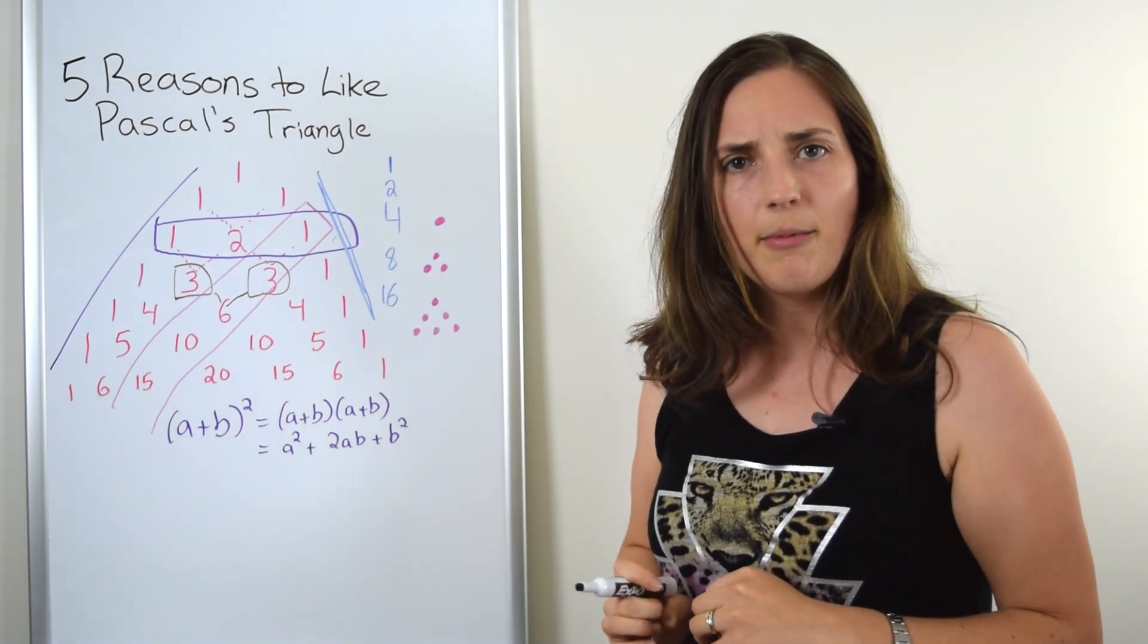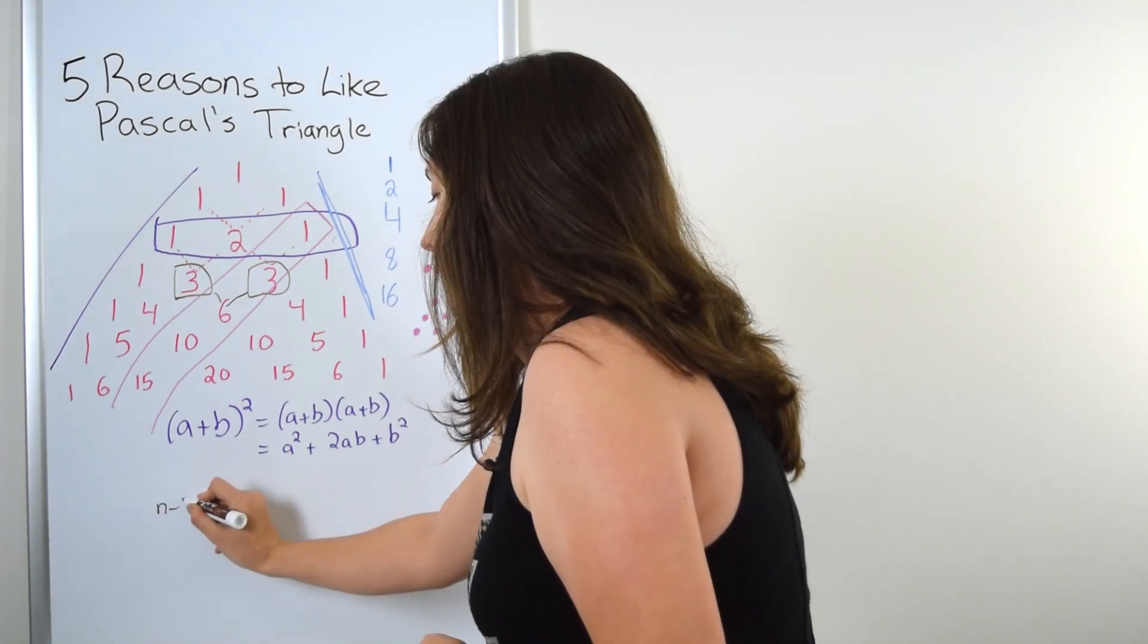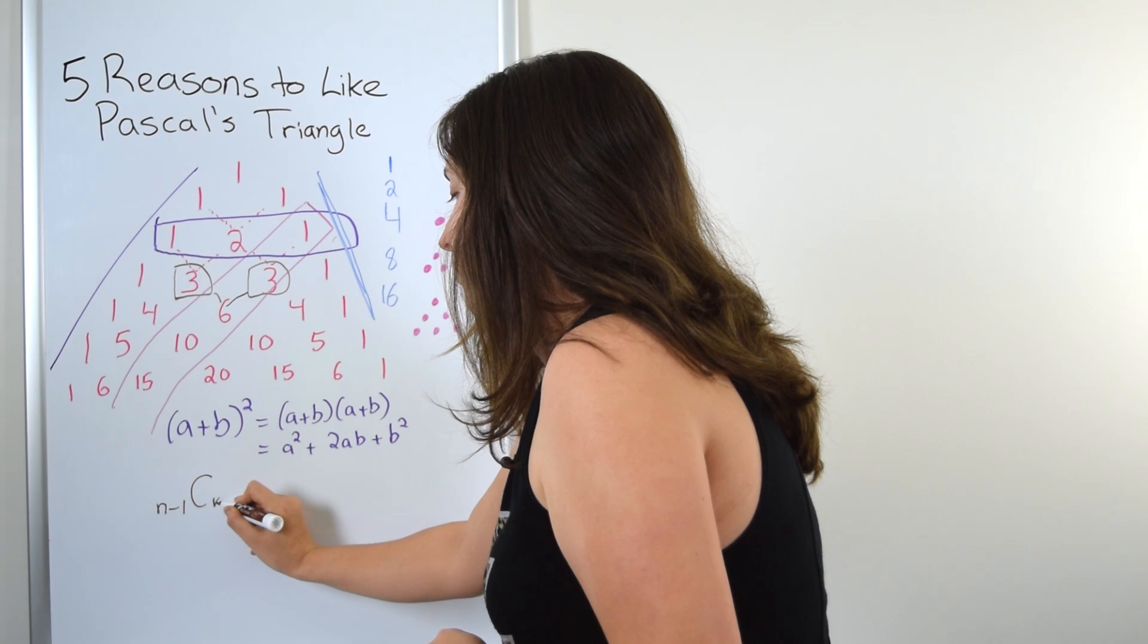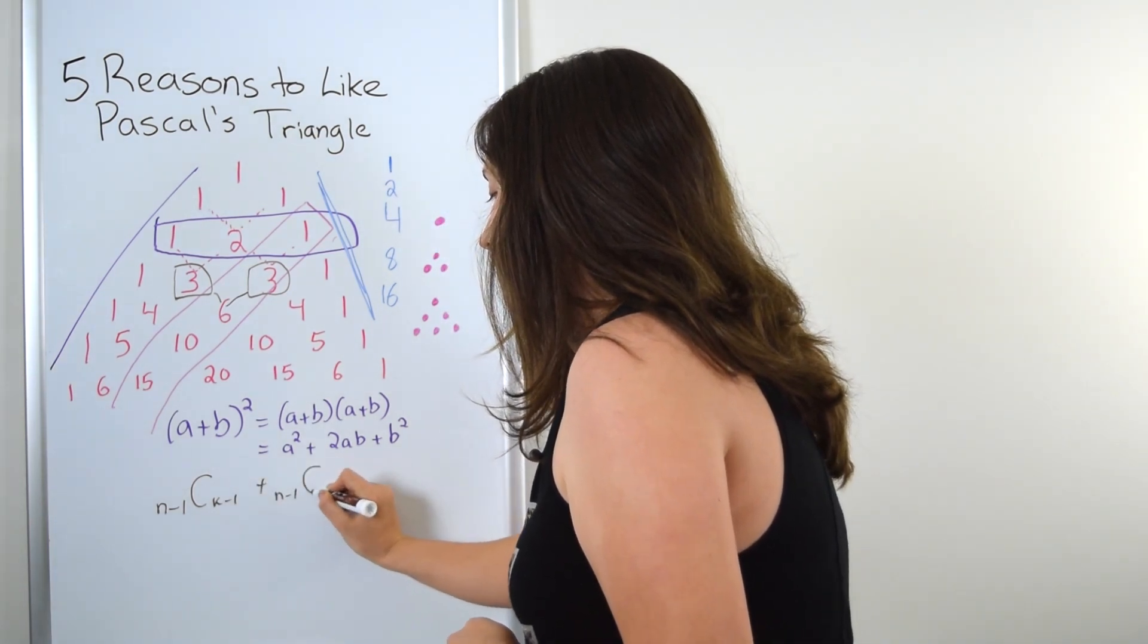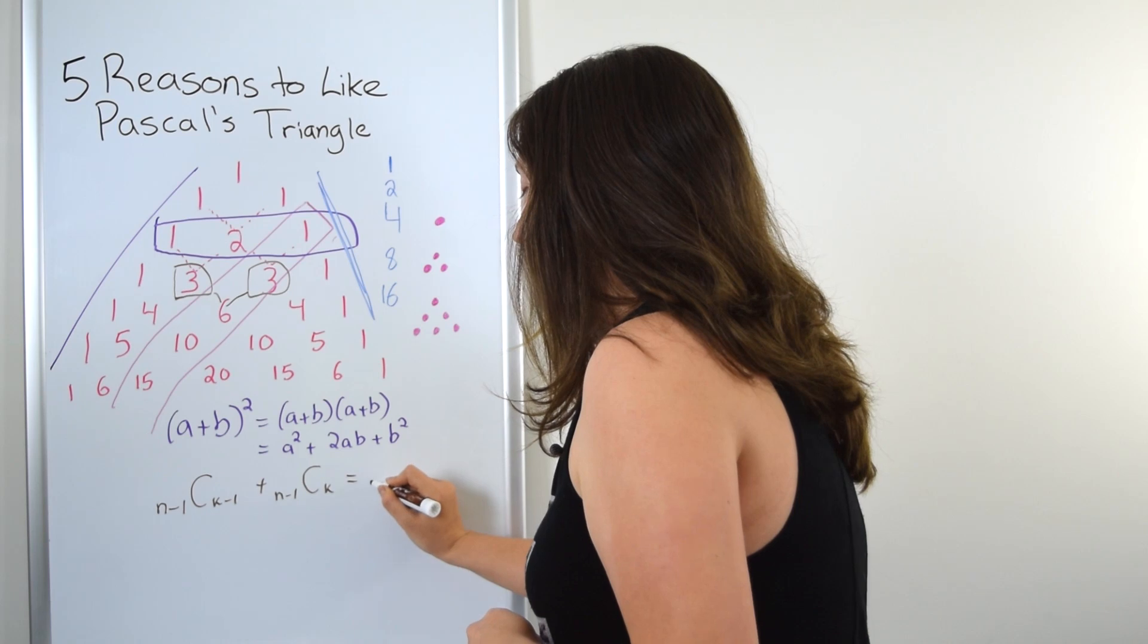That's an interesting property. The property in general is that (n-1) choose (k-1) plus (n-1) choose k is equal to n choose k.